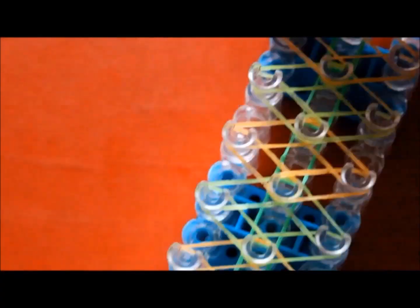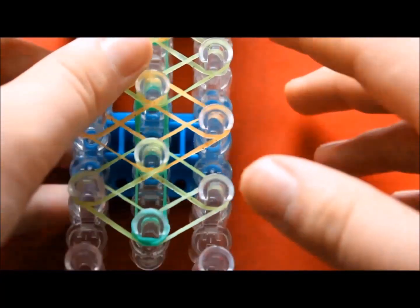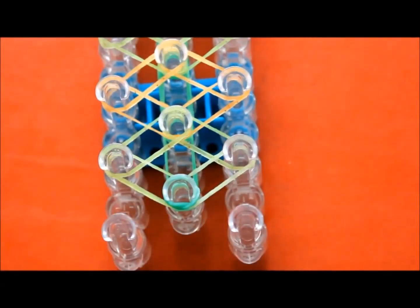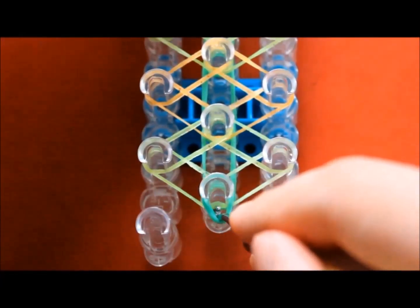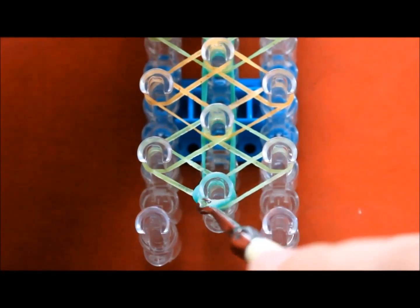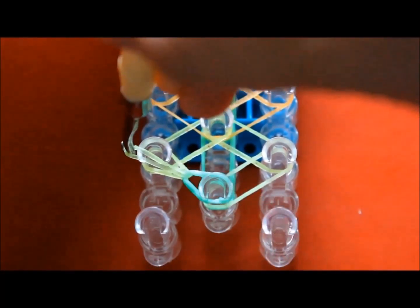Now you can start looming. Turn your loom so that the red arrow is pointing toward you. Pull back your cap band with your hook, grab this one and move it to this pin.